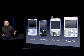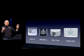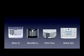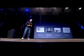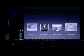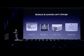The problem is really in the bottom 40% — they all have these keyboards that are there whether you need them or not. They all have these control buttons that are fixed in plastic and are the same for every application. Every application wants a slightly different UI, a slightly optimized set of buttons just for it. And what happens if you think of a great idea six months from now? You can't add a button — they're already shipped. The buttons and controls can't change for each application, and they can't change if you think of another great idea later.